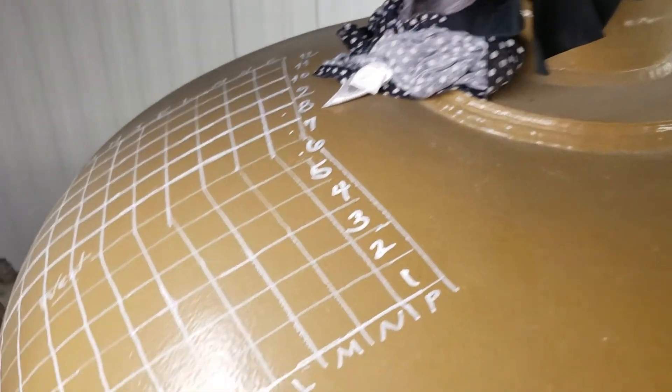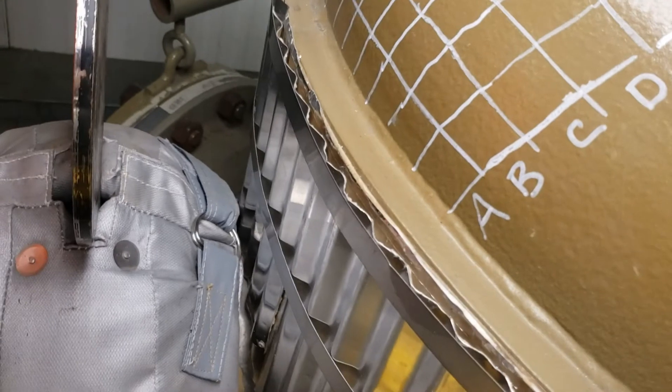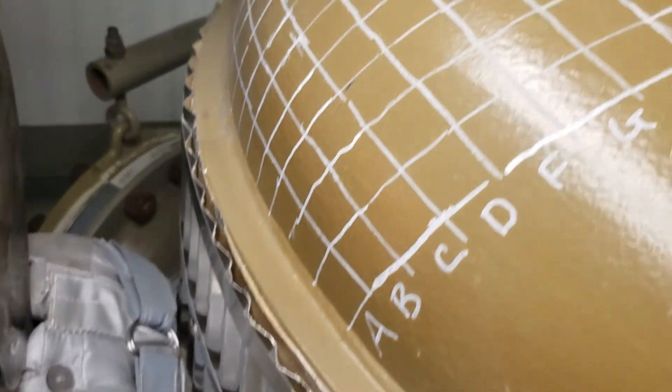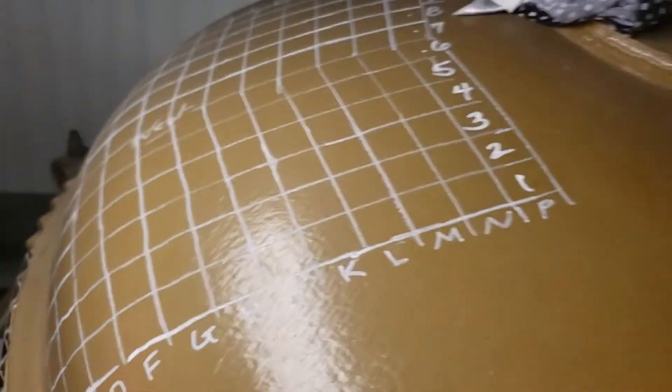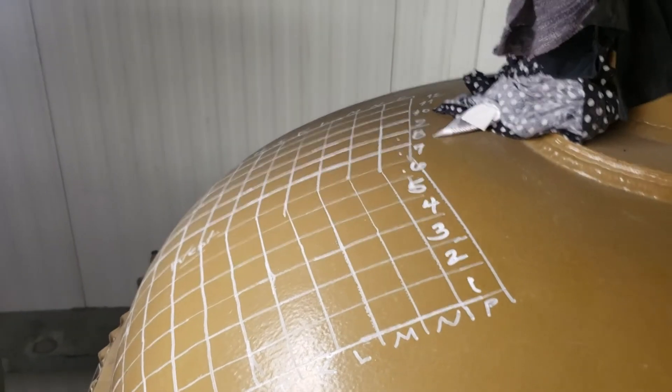It's a grid on the head, so it goes from almost the middle of the vessel down to the girth seam of the head. So then I'll just have the UT technician UT it.